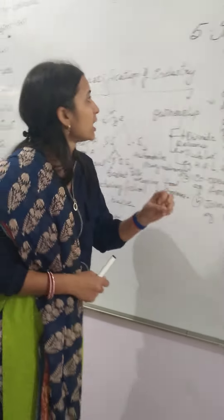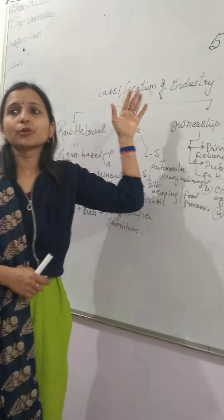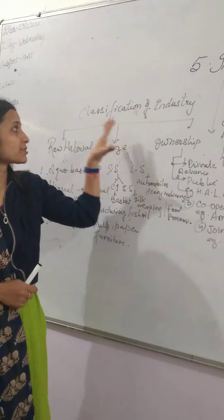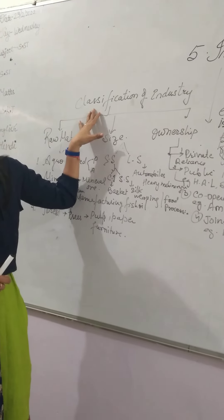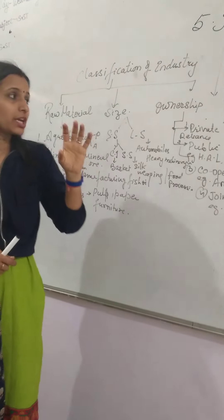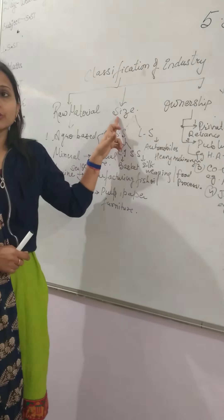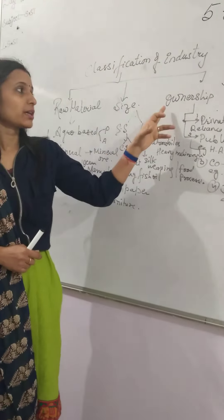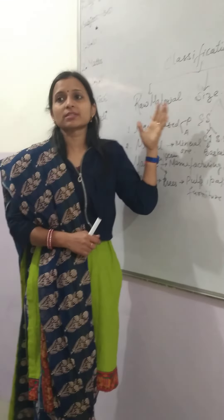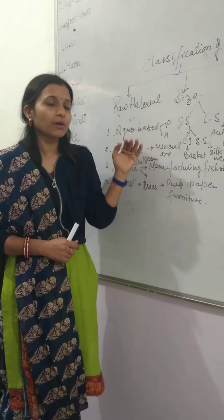Now come to the classification of industries. On the basis of classification, we are dividing the industry into three parts: on the raw material, according to size, and according to ownership. Firstly, we will discuss about the classification on the basis of raw material.